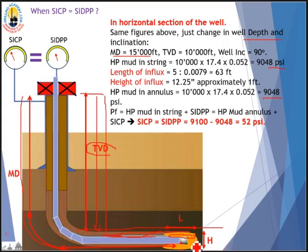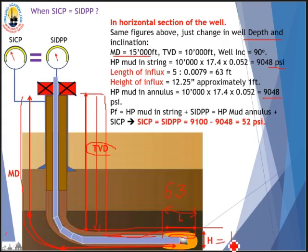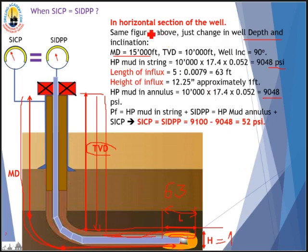In the horizontal section, the kick occupies a length of 63 feet along the horizontal wellbore, but its vertical height is only about one foot (roughly the wellbore diameter of 12.25 inches). The hydrostatic pressure of one foot of influx is almost nothing — negligible. Therefore, there is no difference between shut-in casing pressure and shut-in drillpipe pressure. This explains why in a horizontal well, SICP equals SIDPP.